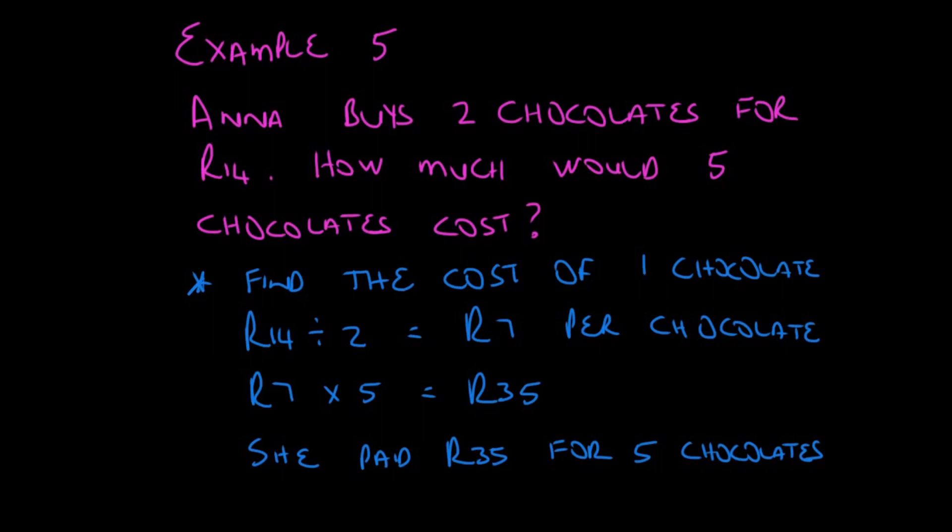So, if we paid 14 Rand for 2 chocolates, we divide by 2. And we see that we paid 7 Rand per chocolate. And this gives us the opportunity to find out what we would pay for 5 chocolates. We say 7 times 5 is 35 Rand. And therefore, she paid 35 Rand for 5 chocolates.